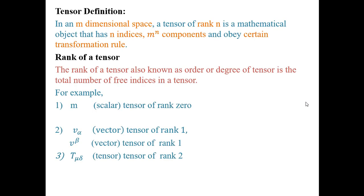In mathematics, we say that in an m-dimensional space, a tensor of rank n is a mathematical object that has n indices, m raised to power n components, and it obeys certain transformation rule. You have a tensor of rank n, which means different concepts are used: m-dimensional space, rank, indices, and transformations. We will discuss this later on in lectures.